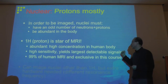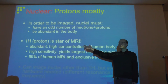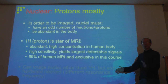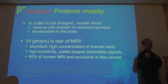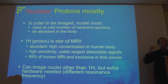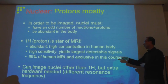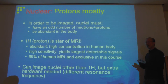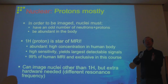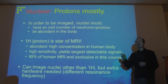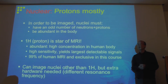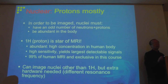In 99% of human MRI we use proton MR, and in this course we deal exclusively with proton MRI. Other nuclei can be imaged, but their signal is very weak and they have very different resonance frequencies, requiring different hardware. Most hospital MR machines, including the one at RCBI, don't have that capability.